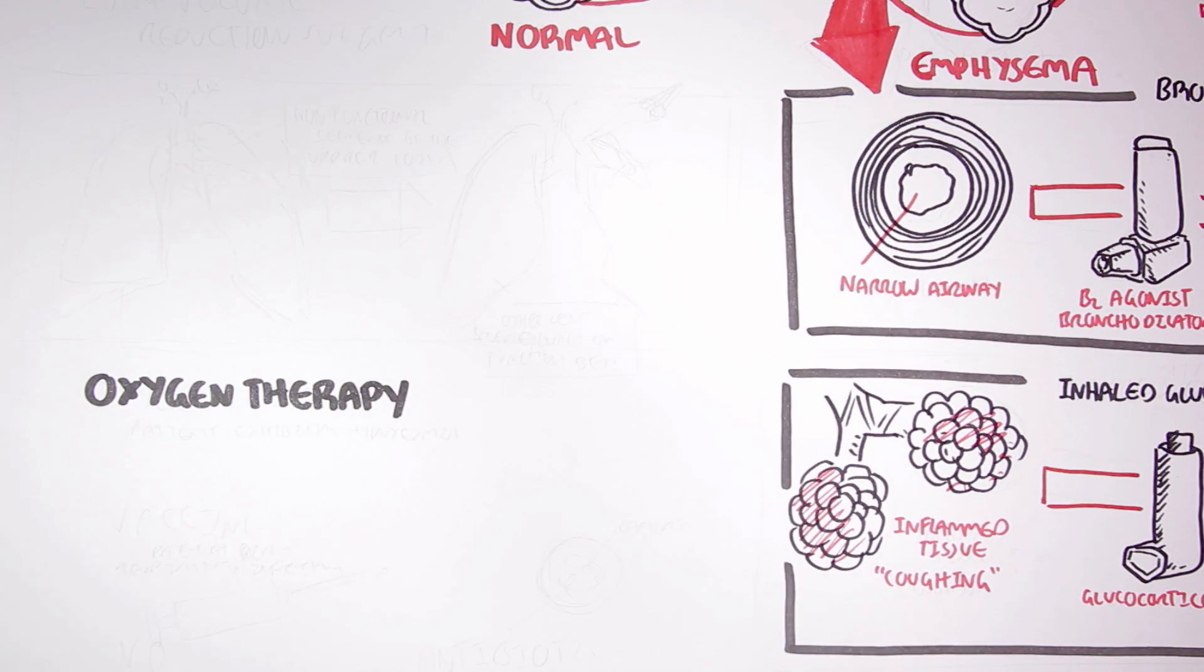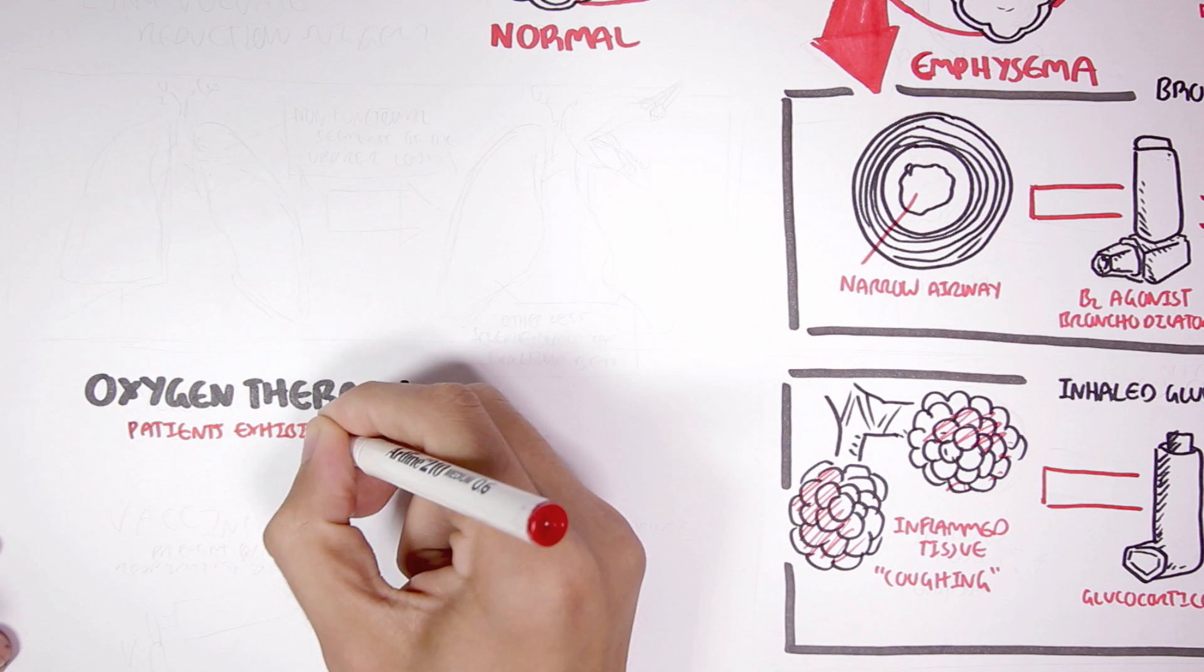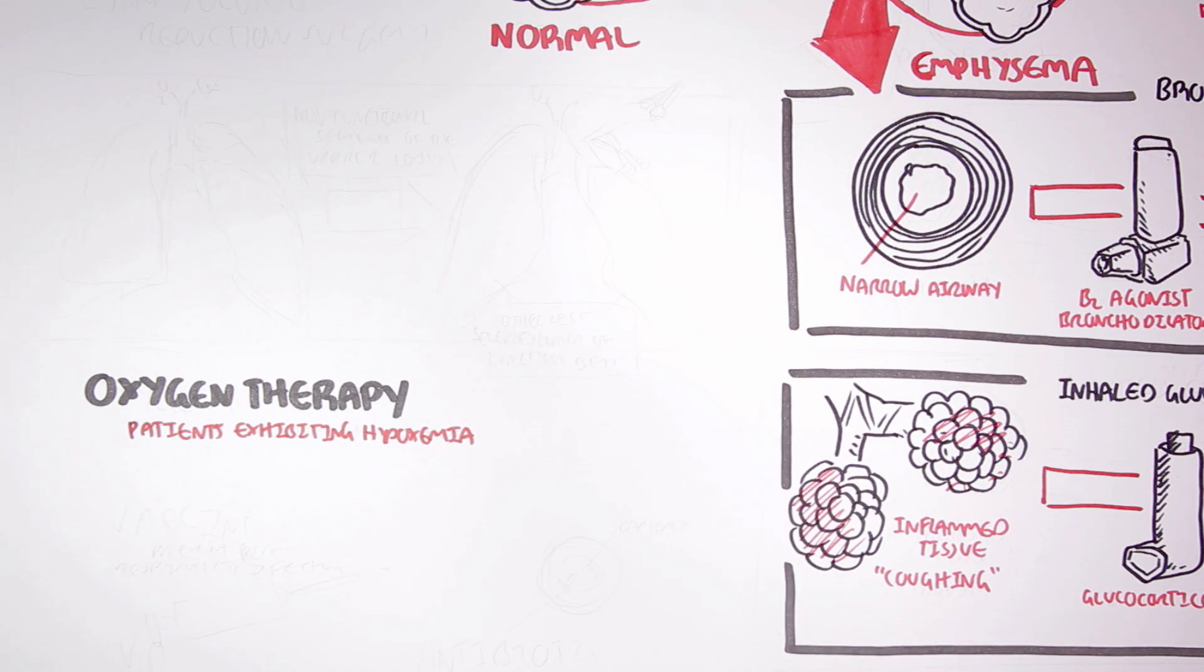Oxygen therapy is an important treatment for people with emphysema if they exhibit hypoxemia. Hypoxemia is when you have low oxygen levels in the blood. If an individual has hypoxemia, they require oxygen therapy daily, about 15 hours or more per day. Oxygen therapy can improve survival rates.